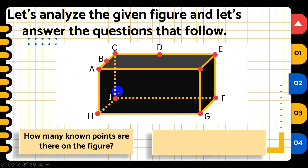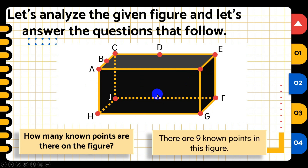To find out how many points are in the figure, we look for those labeled with capital letters. Counting them: 1, 2, 3, 4, 5, 6, 7, 8, 9. There is a dot without a capital letter, so we cannot count it as a known point. The answer is 9 known points in this figure.